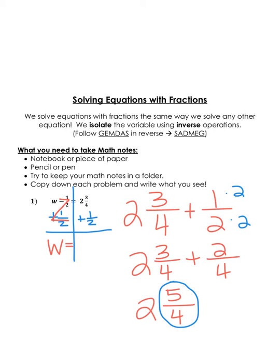So four goes into five one time, with one-fourth remaining. And when we add the whole numbers together, our final answer will be three and one-fourth. And that is what W will equal. If you wanted to check, you could do three and one-fourth minus one-half, and that will prove to equal two and three-fourths. So that is how we solve an equation with a fraction.